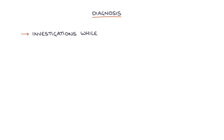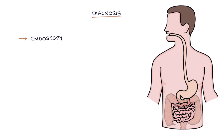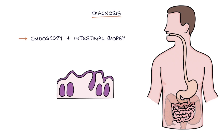To establish a diagnosis, investigations must be carried out while the patient is still on a diet containing gluten — otherwise it may not be possible to detect the antibodies or the inflammation in the bowel. First, check total IgA levels to exclude IgA deficiency, then check for anti-TTG antibodies (typically the first choice) or anti-EMA antibodies. One way to definitively establish a diagnosis is endoscopy with intestinal biopsies, which will show classic signs: crypt hypertrophy and villus atrophy.